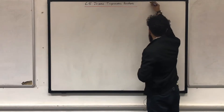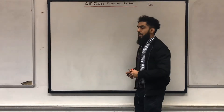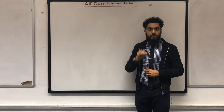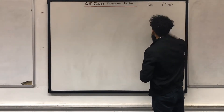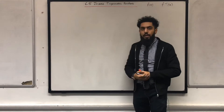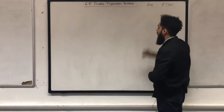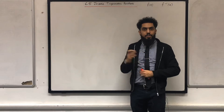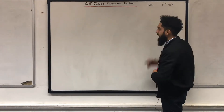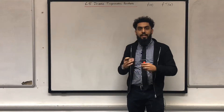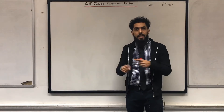Suppose I've got a function f of x. The notation for the inverse function of f of x is f to the power minus 1 of x. The question is, how are these two functions related graphically? Well, the functions f of x and the inverse function of f of x are reflections of each other in the line y equals x.